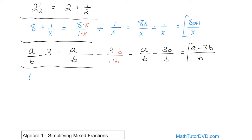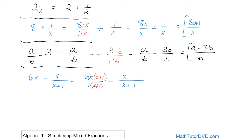Now let's make it a little more complicated. What if I have six x minus x over x plus one? The whole part is six x and the fractional part is x over x plus one. But six x can be written over one. So that's six x over one minus x over x plus one. The denominators I have are one and x plus one, so I'll multiply the first fraction by x plus one over x plus one to get the common denominator x plus one.